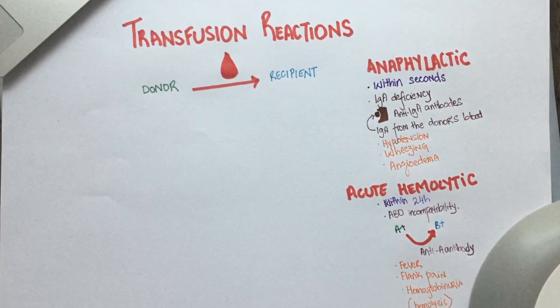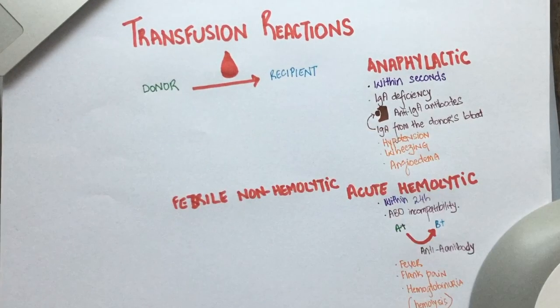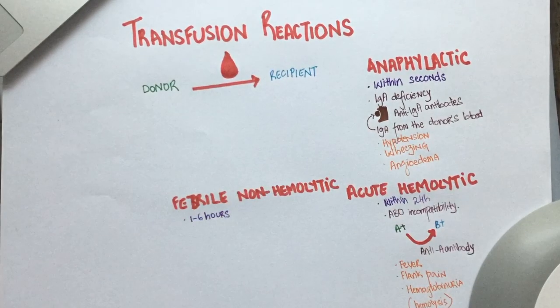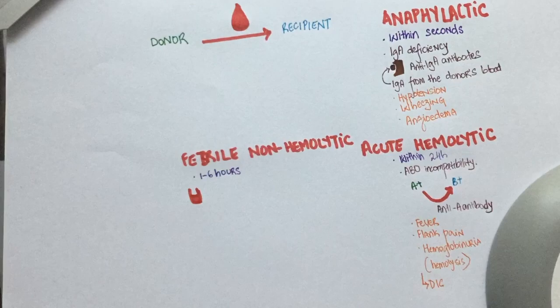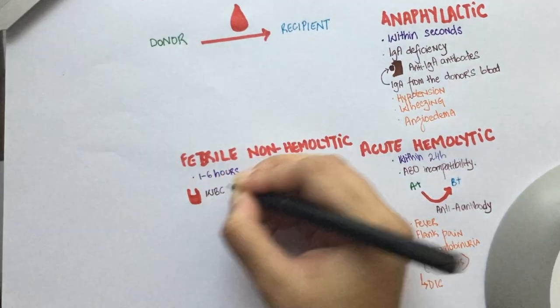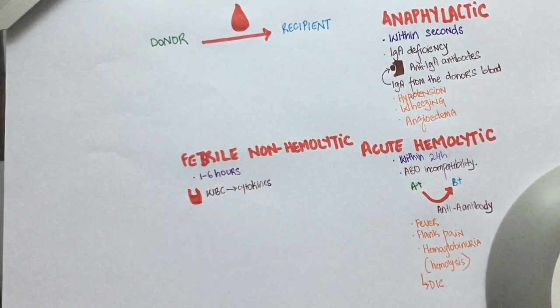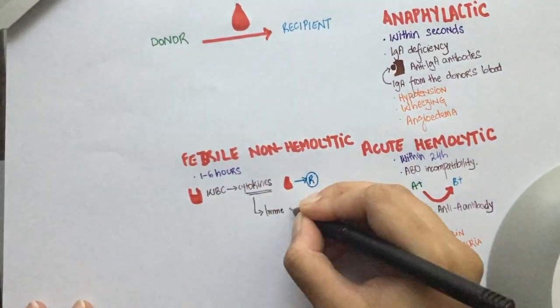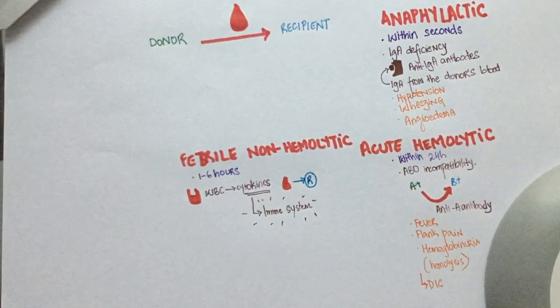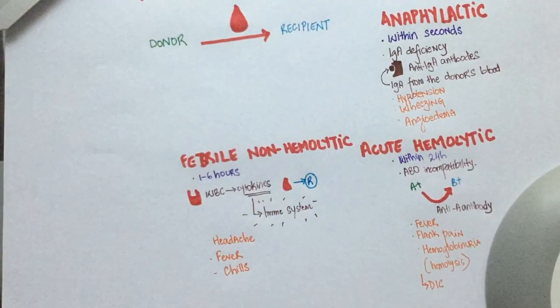The third one is the most common transfusion reaction — febrile non-hemolytic reaction. This reaction is likely to take place between one to six hours after transfusion. When blood is stored, some white blood cells release cytokines. When transfused, these cytokines trigger the immune system of the recipient's body, resulting in symptoms of headache, fever, and chills.